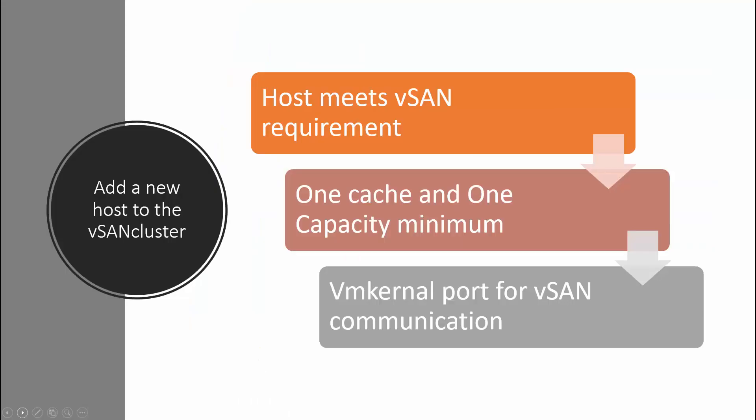First we're going to see how to add a new host to the vSAN cluster. Adding a new host to a vSAN cluster is quite straightforward. You just need to ensure that the host meets vSAN requirements or recommendations such as network interface, one cache tier and one capacity tier device. Also if the host needs additional capacity, you have to add additional capacity disks. And you'll need a VMkernel port for vSAN communications.